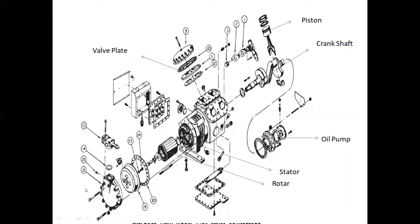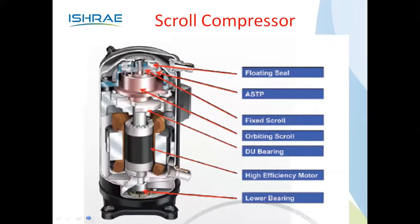These are the compressors used today, particularly for minus applications in bigger systems. The scroll compressor — you can see the cross-section showing the orbiting scroll rotating within the fixed scroll, creating the compression effect. This compressor uses du bearings for protection. It is an efficient compressor for smaller air conditioning systems, similar to the screw compressor. However, it is an irreparable compressor — once any internal part breaks, the whole compressor must be replaced, making it very costly.